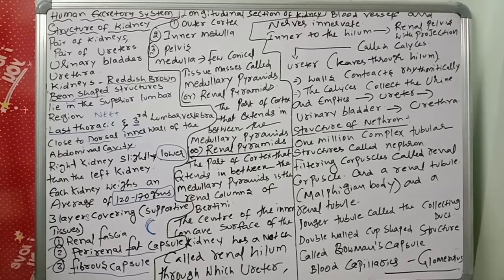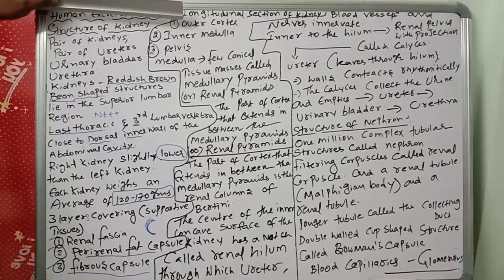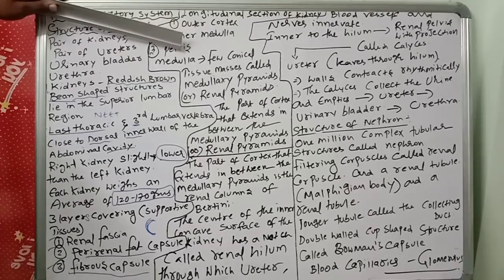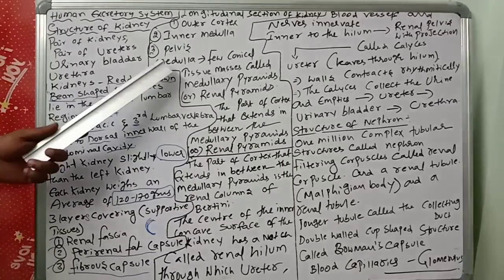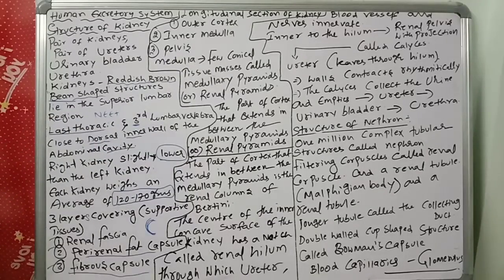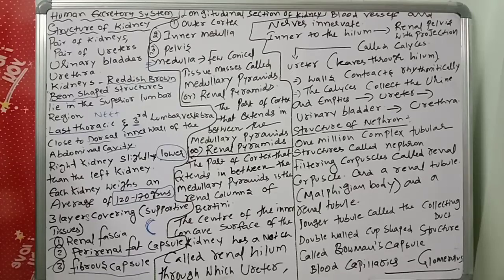Now, the longitudinal section of the kidney. If you cut the kidney and look at the longitudinal section, it shows an outer cortex, an inner medulla, and a pelvis. The medulla is divided into a few conical tissue masses called medullary pyramids.